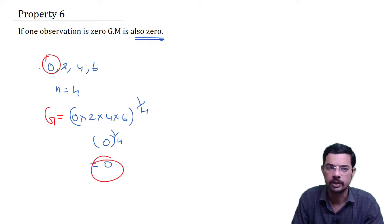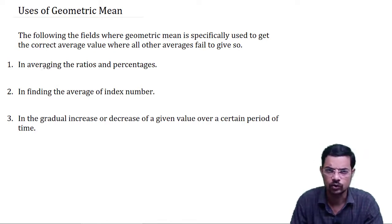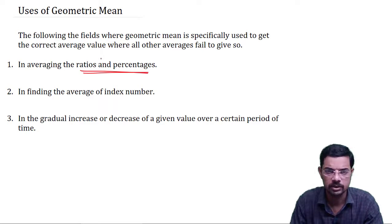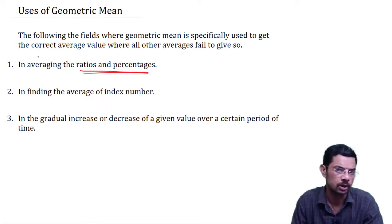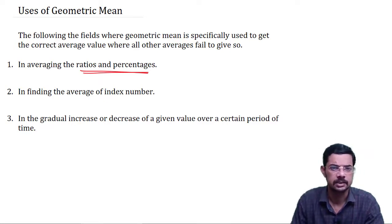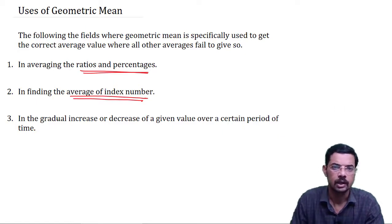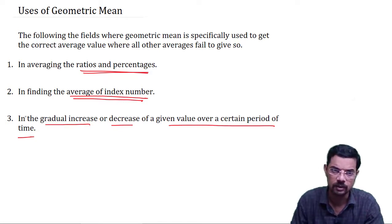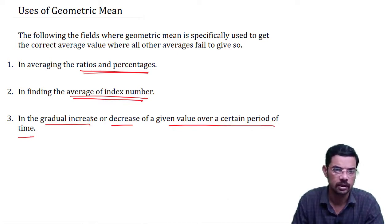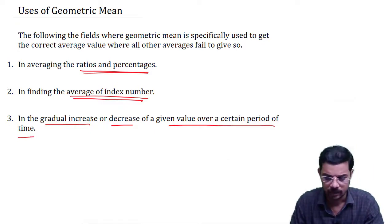Now let us discuss some uses of geometric mean. First, it is very useful in finding averages of ratios and percentages — arithmetic mean and other methods are not suitable here, geometric mean is the most suitable. Second, it is used in finding the average of an index number. Third, in the case of gradual increase or decrease of a given value over a certain period of time, we use geometric mean.